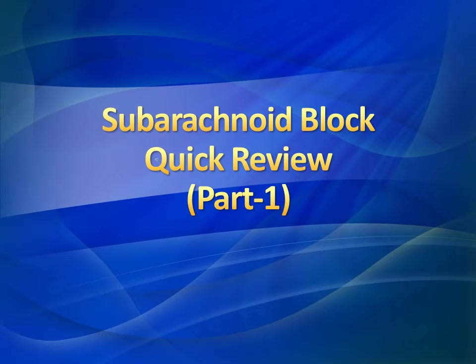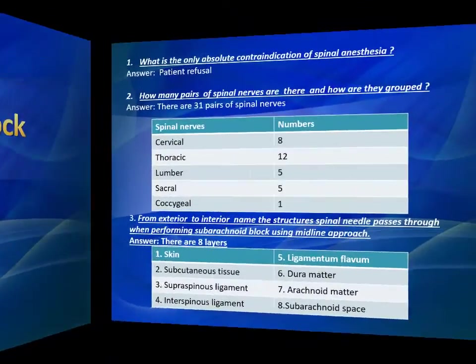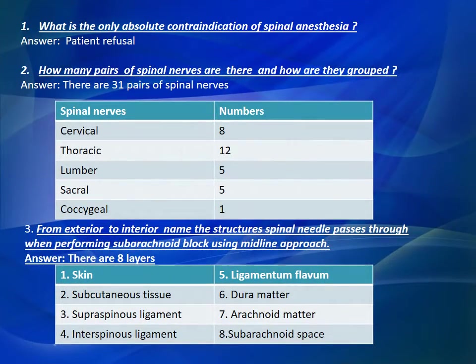Subarachnoid Block Quick Review, Part 1. Question Number 1: What is the only absolute contraindication of spinal anesthesia? Answer: Patient refusal.